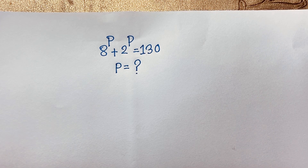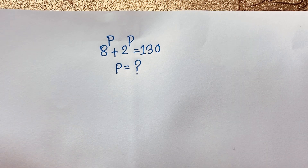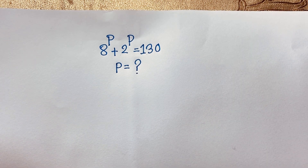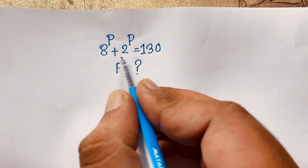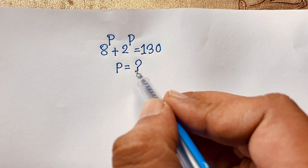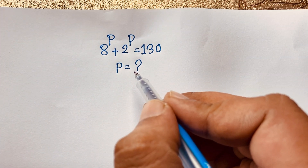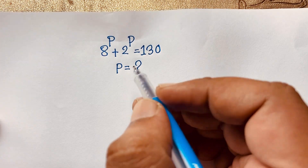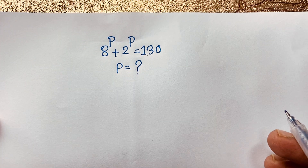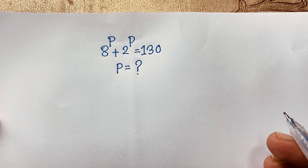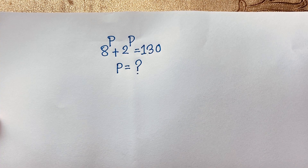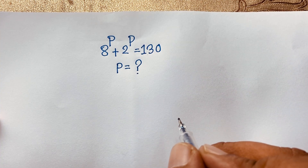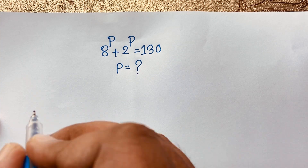Welcome to Russell's classroom. Today we have solved a nice math olympiad question: 8 to the power p plus 2 to the power p is equal to 130. We'll find out what is the value of p in this interesting exponential problem.